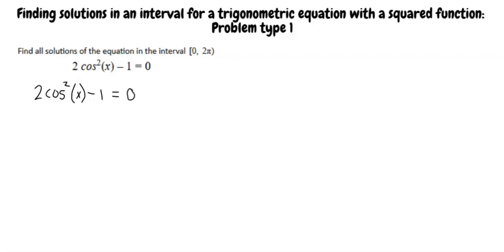To solve this equation, we first need to solve for cosine of x. Using our algebra skills, we first add 1 to both sides of the equation. Then, we divide both sides by 2. Now, we have cosine squared of x equals 1 half.